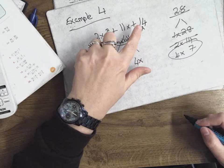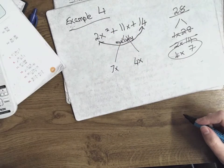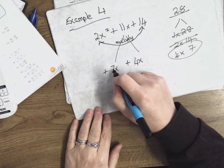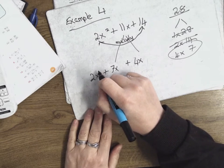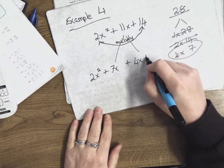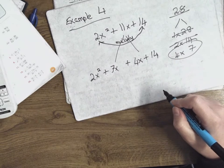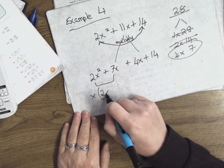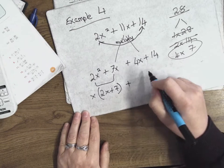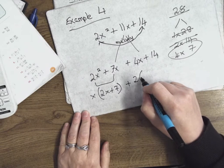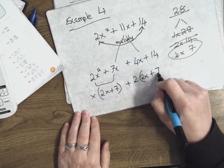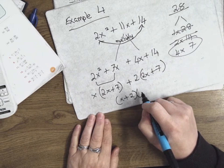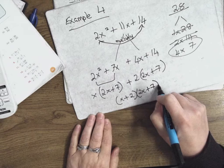So I'm splitting the 11x into a 7x and a 4x. If I'm adding them, I give them the same sign, and I want to end up with plus 11x, so both get a plus. Then I have 2x squared at the beginning and plus 14 at the end. Out of the first two, take out x and you're left with 2x plus 7. Out of the next two, take out 2 and you're left with 2x plus 7. My second bracket is the same. So my first bracket is x plus 2 and my second bracket is 2x plus 7.